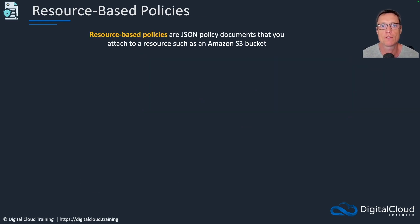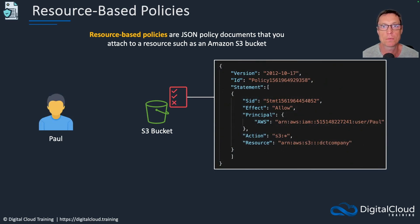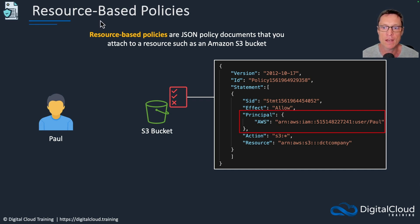Next, we have resource-based policies. These are also JSON policy documents, and you attach them to a resource such as an Amazon S3 bucket. You'll note something important in a resource-based policy: there is a principal element. You will never see the principal element in an identity-based policy, so as soon as you see it, you know it's a resource-based policy. There's no need to specify the principal when the policy is attached to an identity — the identity is the principal.